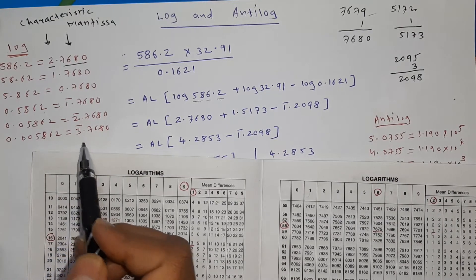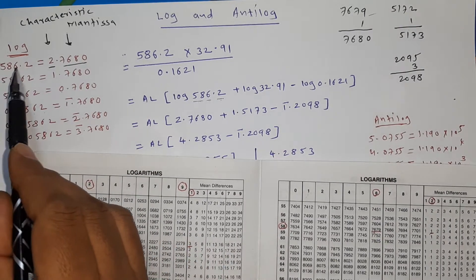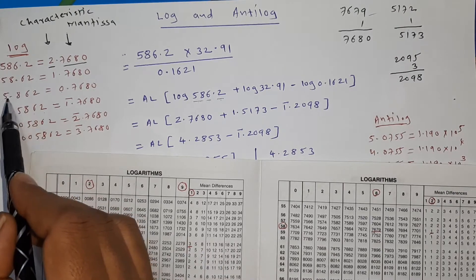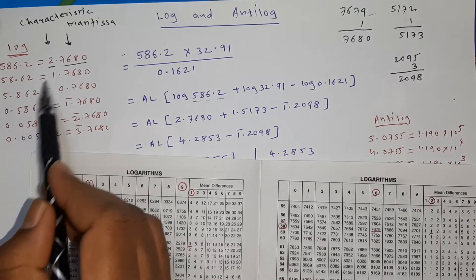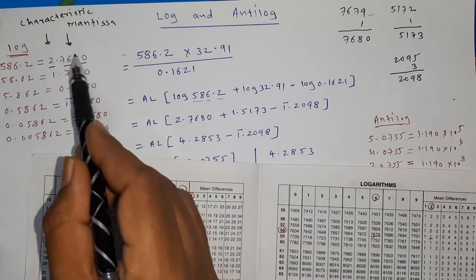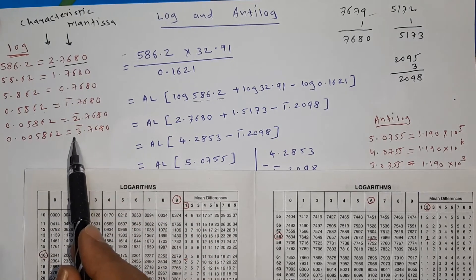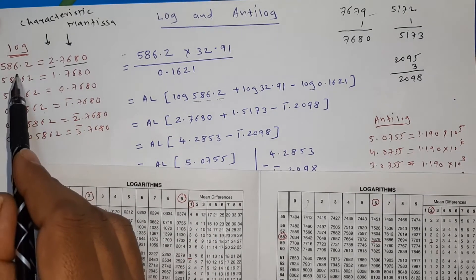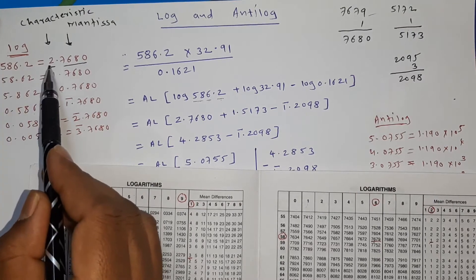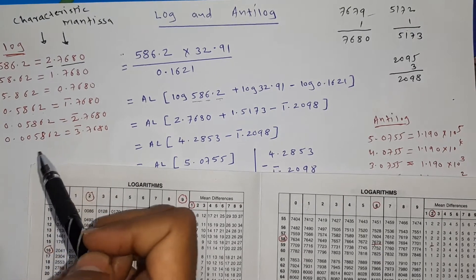If the number is 0.05862 the characteristic is bar 2; if it is 0.005862 then bar 3, and so on. The mantissa 5862 always remains the same regardless of where the decimal is. Only the characteristic changes, and the rule is: number of digits before the decimal minus 1 equals the characteristic.